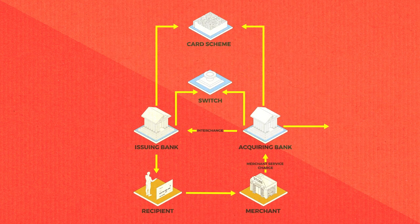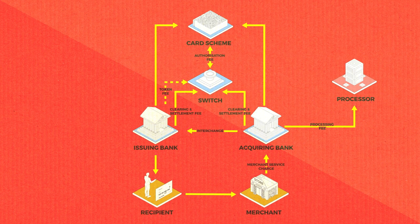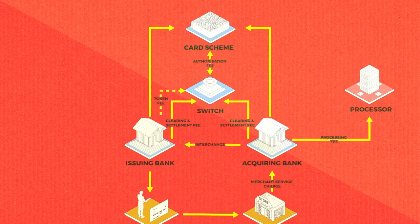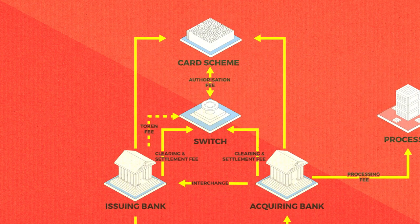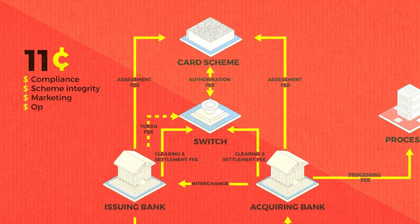The payment switch is a separate entity that facilitates communication between various banks to process payments, authorizations, clearing and settlement. It understands which providers it needs to process with, formats the message for that provider, sends it to them, gets a response, changes the response to a generic format, and sends the response back to the originator. Although this switch is a separate entity in the majority of cases, this function is performed by the card companies. A typical card scheme usually retains a fee of about 11 cents to cover costs of the card scheme licensing function, including compliance, scheme integrity, marketing and other operating expenses.